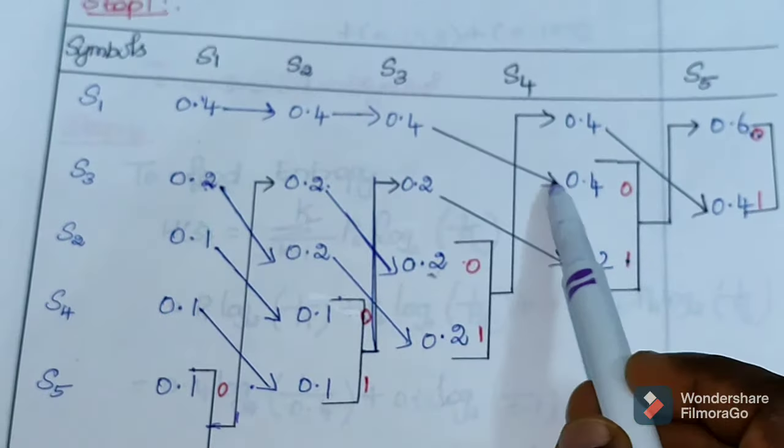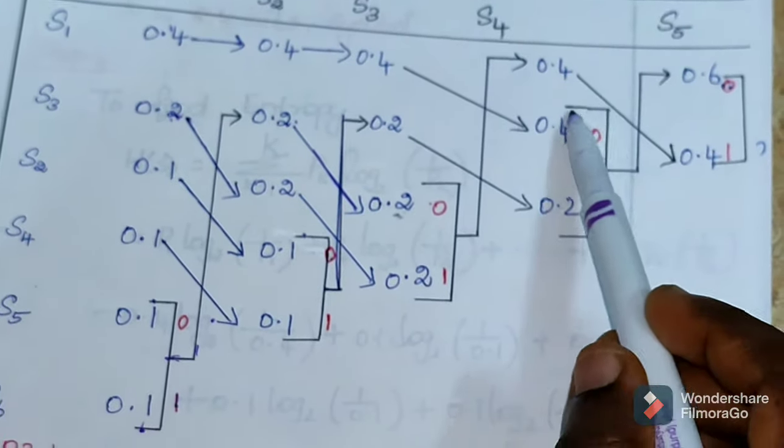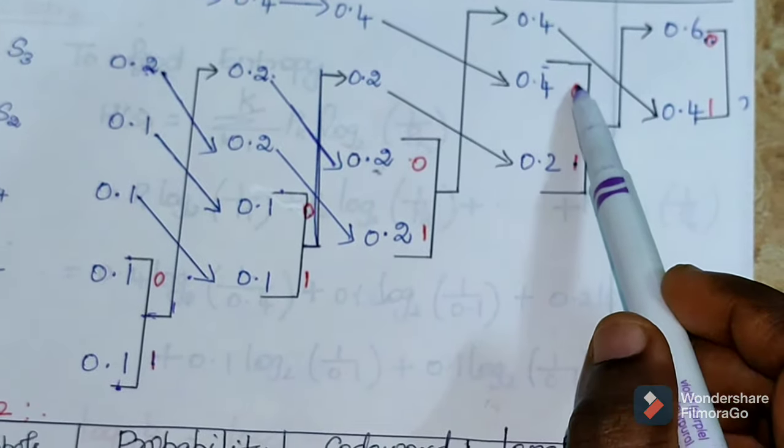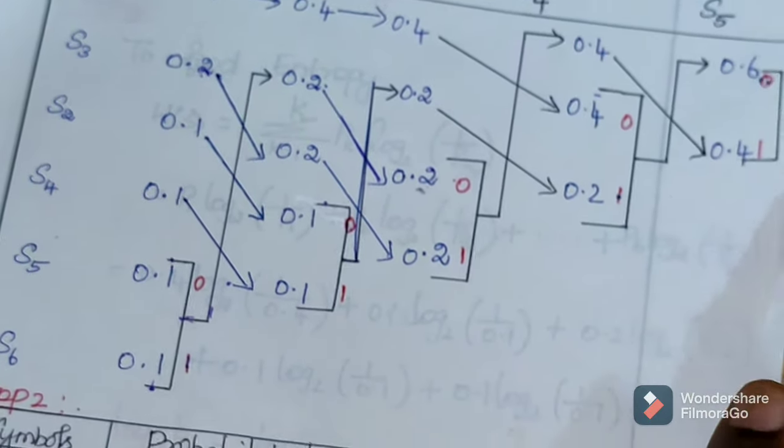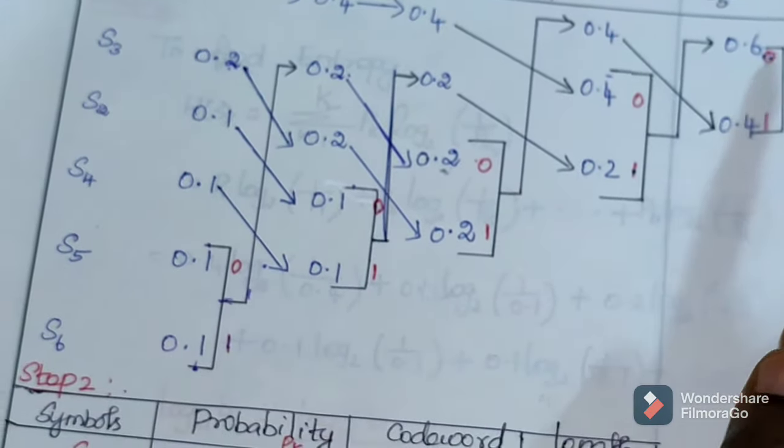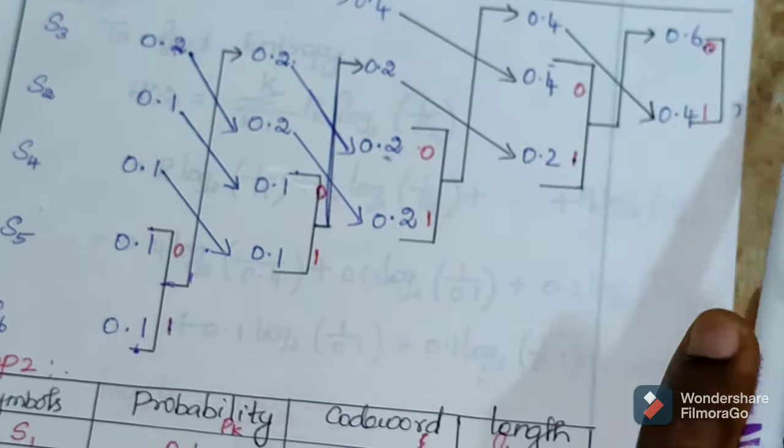Again the last two lowest probabilities are combined. 0.1, codeword is assigned. The sum is 0.2. So 0.4 is first, then 0.2. One step downward. Again the last two probabilities, codeword is assigned. Then another step downward.